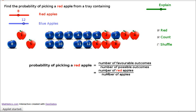So we write the favourable outcomes, the number of red apples over the number of apples and then we write 8 red apples and 20 total number of apples and that is two-fifths.